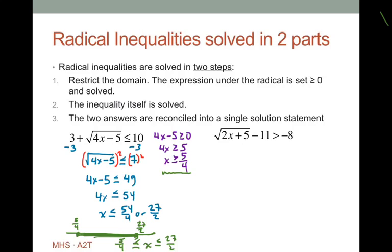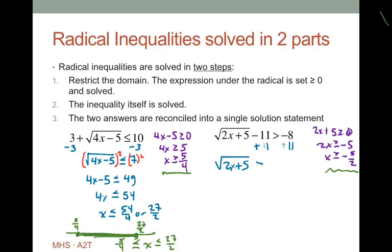Square root of 2x plus 5 minus 11 is greater than or equal to negative 8. First, restrict the domain: 2x plus 5 must be greater than or equal to 0, so x is greater than or equal to negative 5 halves. Then isolate the radical by adding 11 to both sides, giving square root of 2x plus 5 greater than 3. Squaring: 2x plus 5 is greater than 9, so 2x is greater than 4, meaning x is greater than 2.